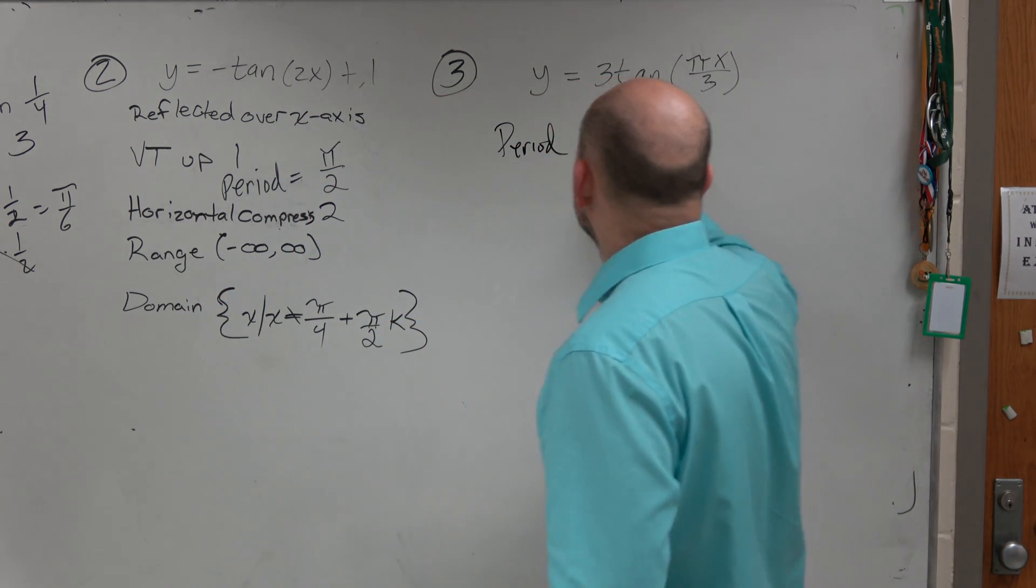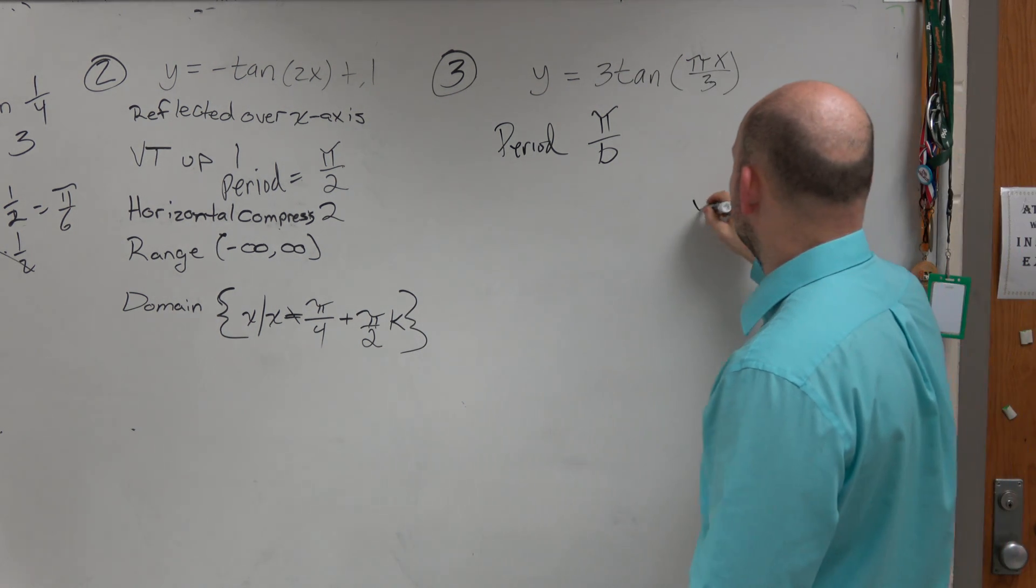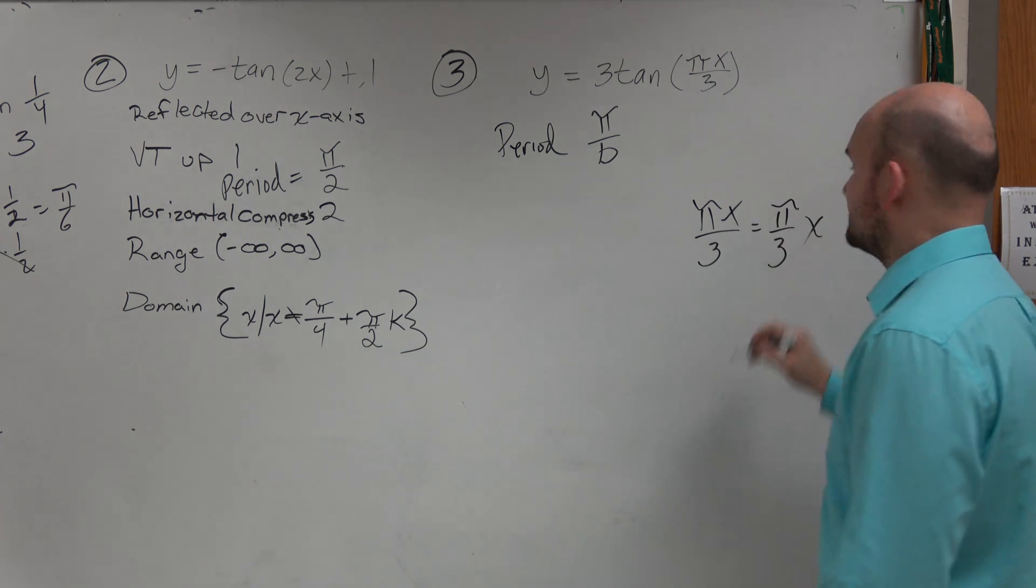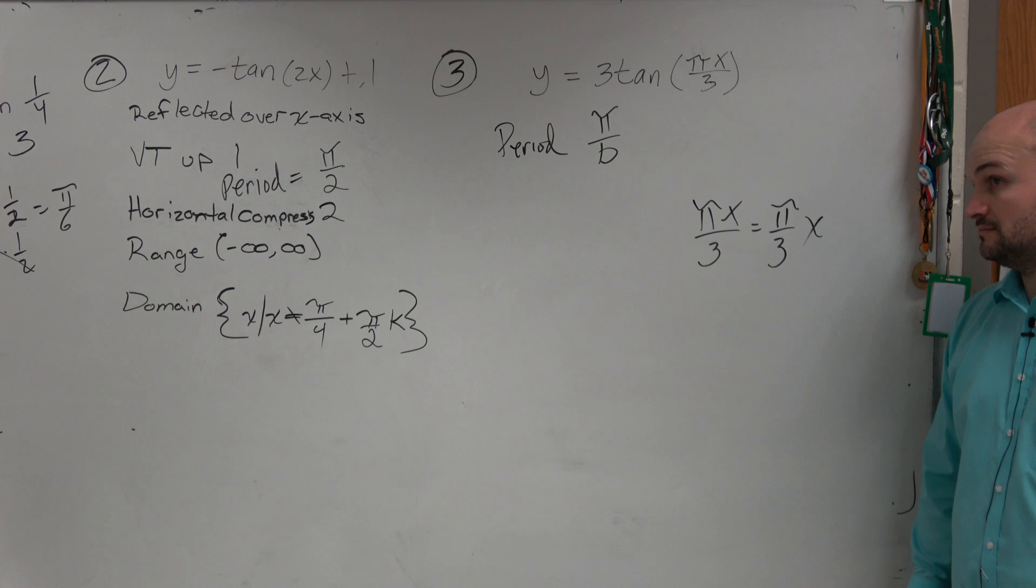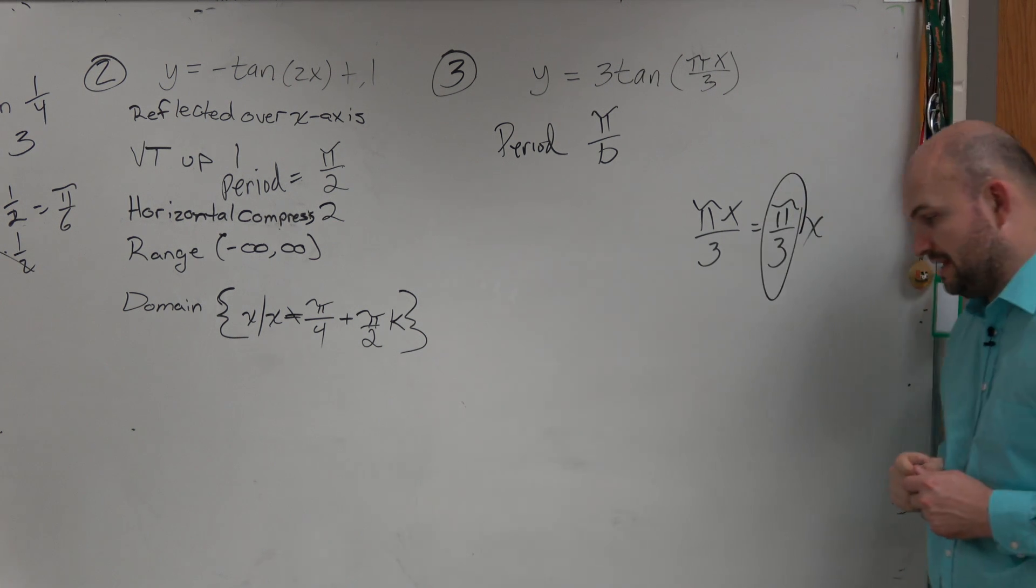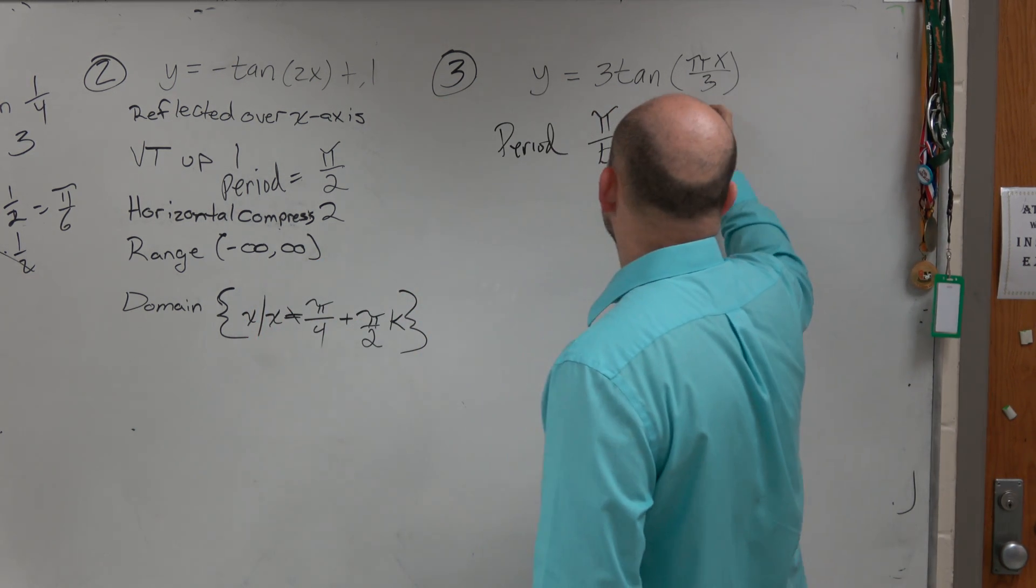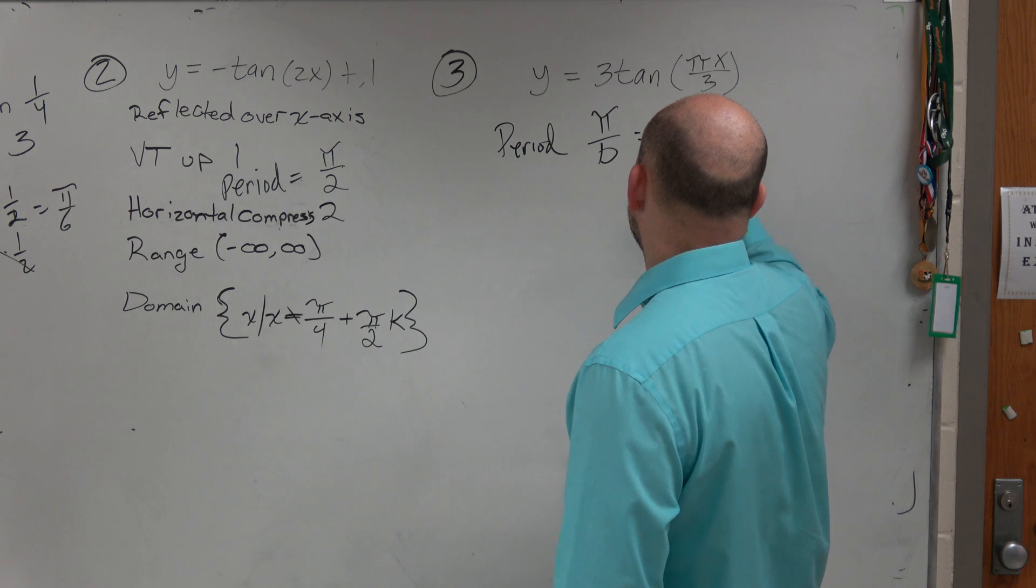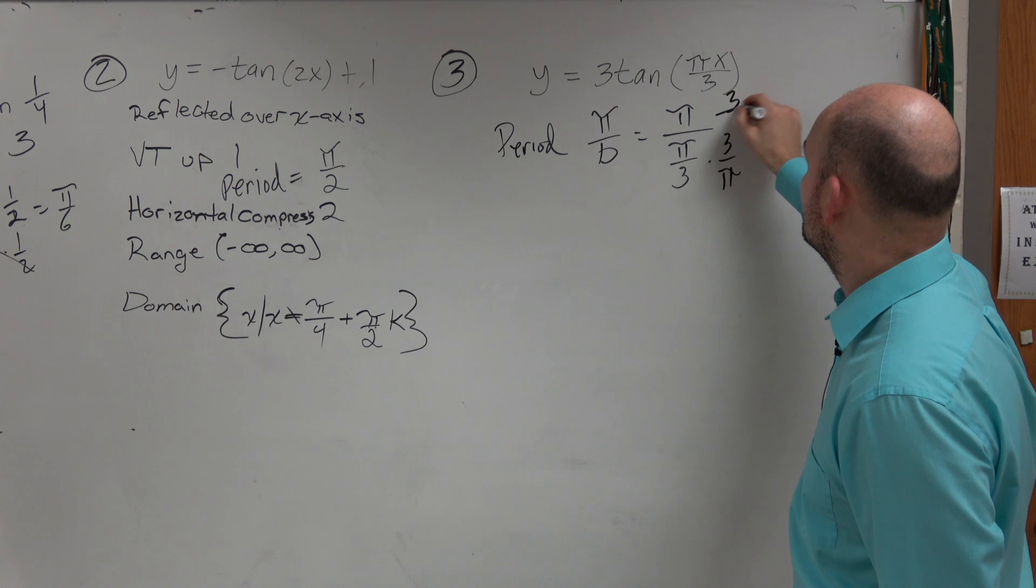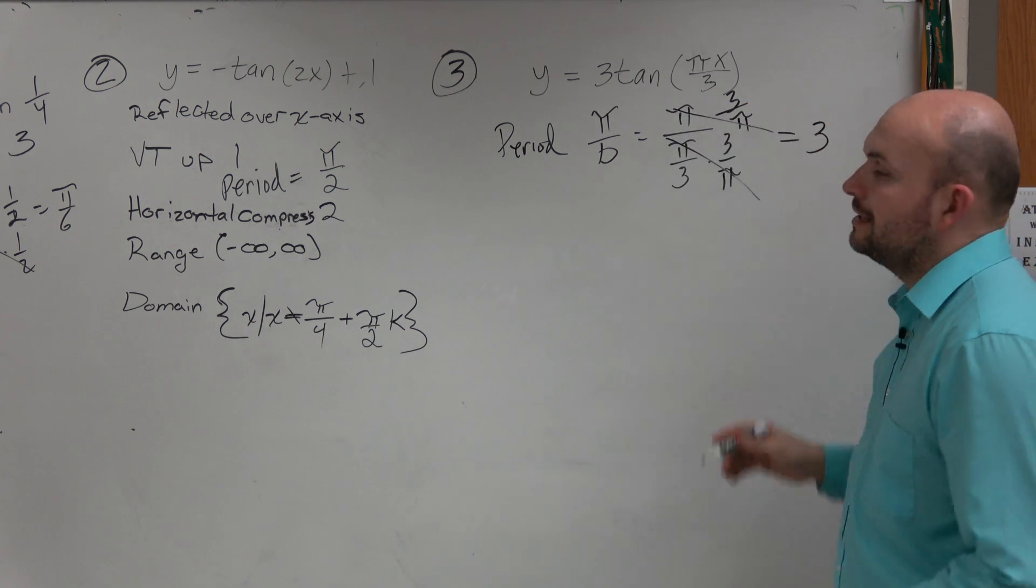Period is π divided by b, where b is the coefficient. So what is being multiplied by x? Well, again, you need to know πx over 3 is the same thing as π thirds x. So that means π thirds is my b, okay? So I have π divided by π over 3. Now, multiply by the reciprocal, and I'm left with 3.